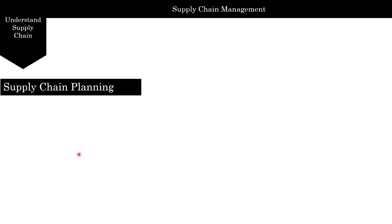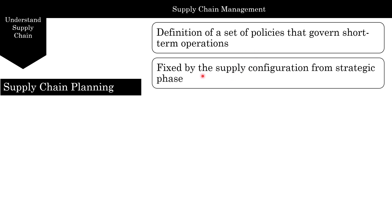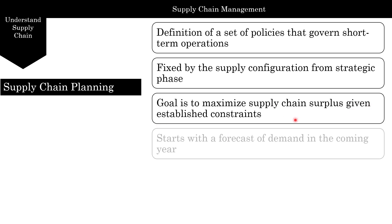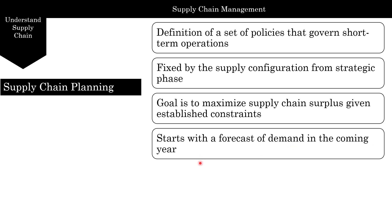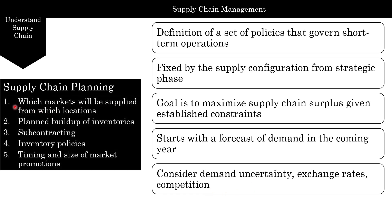Supply chain planning covers about a year or less, maybe six months or a quarter. It's a set of policies that govern short-term operations — so while supply chain design is strategy, this is more tactical. It's fixed by the supply configuration from the strategic phase, and the goal is to maximize supply chain surplus given established constraints. It always starts with a forecast of demand in the coming year, considering demand uncertainty, exchange rates, and competition. Supply chain planning includes which markets will be supplied from which locations, planned buildup of inventories, how much to subcontract, inventory policies, timing, and size of market promotions.